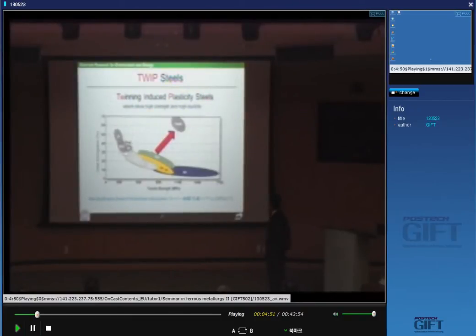Why is TWIP steel used for automotive cars? People use this figure many times. TWIP steel has high strength and high ductility, tensile strength and total elongation. All steels and materials belong to this tendency. People call this a banana curve.